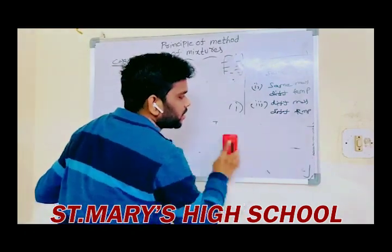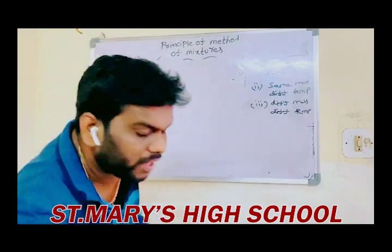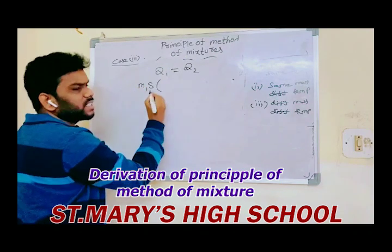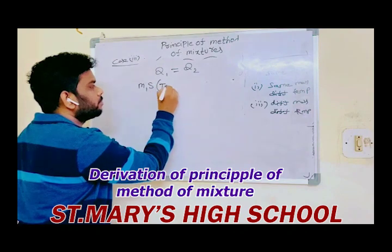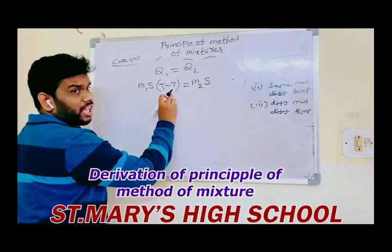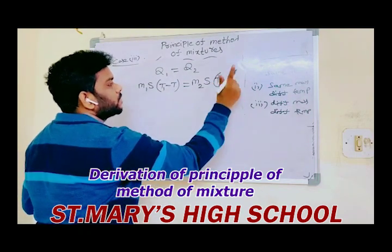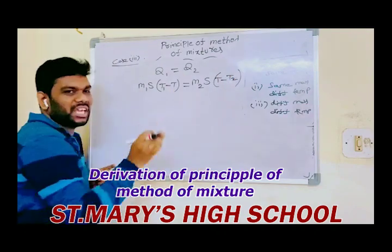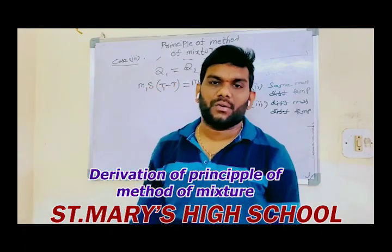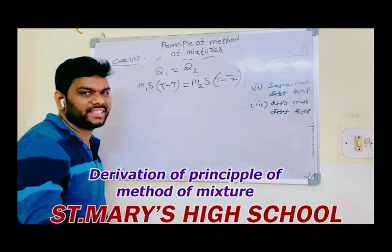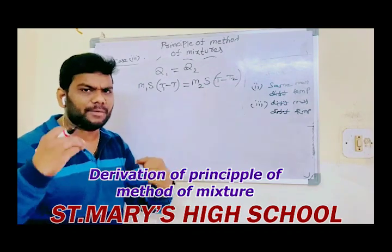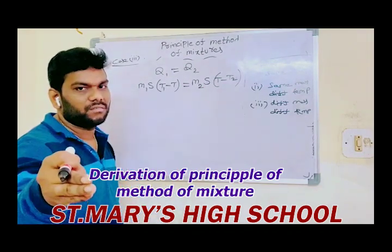This is a very important derivation of the Principle of Method of Mixtures — very important for public examinations. Expanding the brackets: M1·T1 − M1·T = M2·T − M2·T2. Rearranging, bringing T terms together: M1·T1 + M2·T2 = M2·T + M1·T = T·(M1 + M2). Therefore, the mixing temperature T = (M1·T1 + M2·T2) / (M1 + M2).